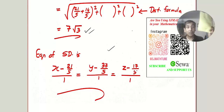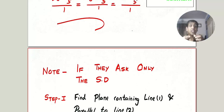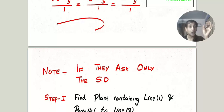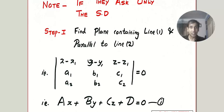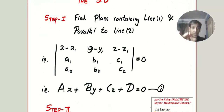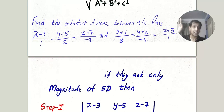Something very important: when you read the question paper, check whether they are asking for the equation of the shortest distance or only the distance. If they ask only the distance, don't do this long process — there is a shortcut. When you read the question paper, be aware: if they ask only the shortest distance, copy this shortcut method. It has Step 1, Step 2, and that's it.